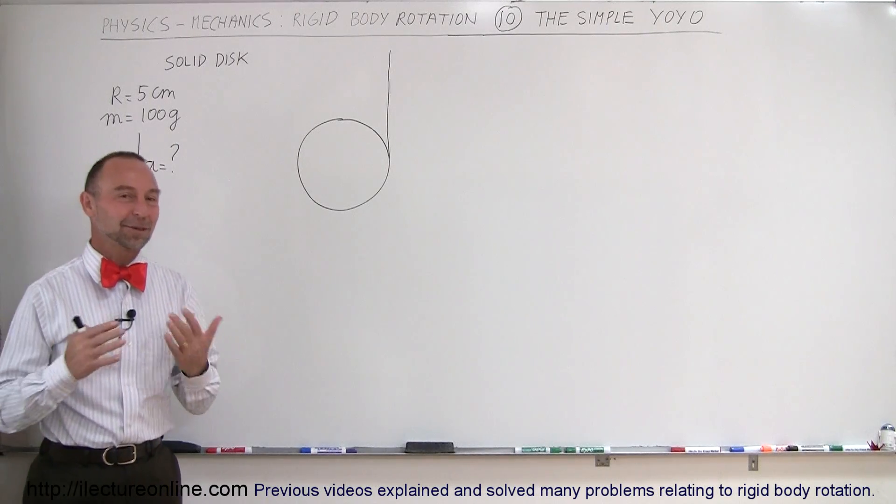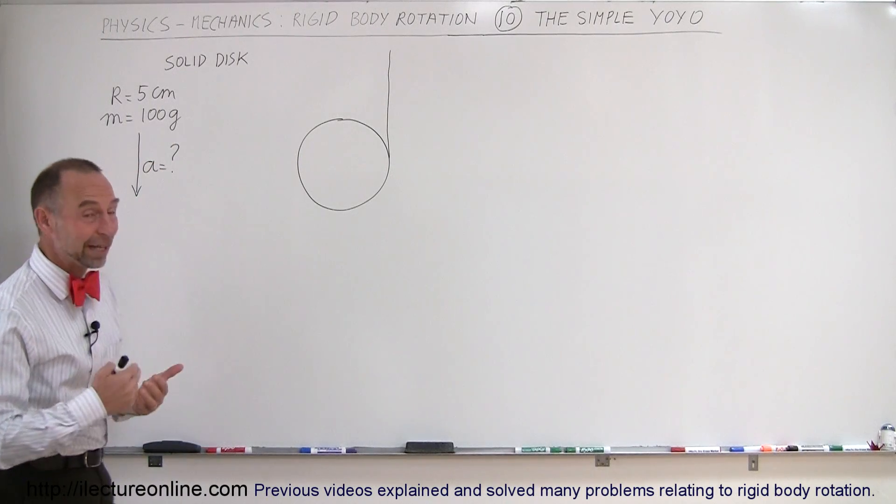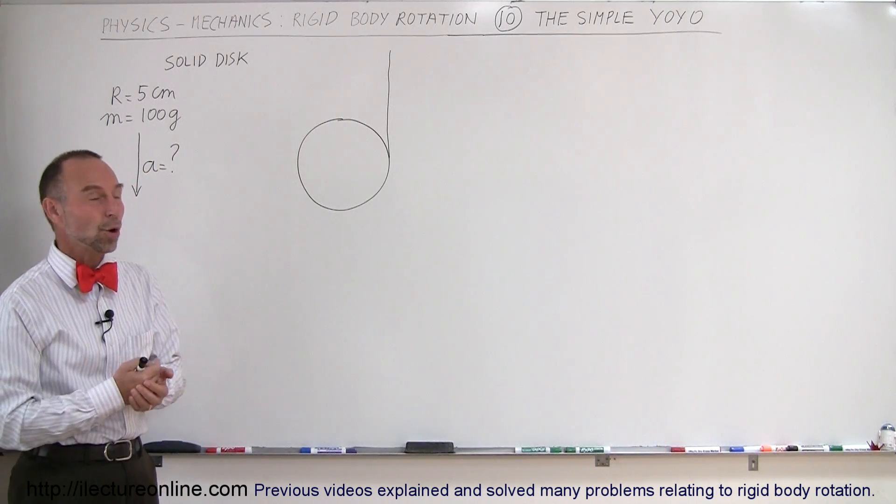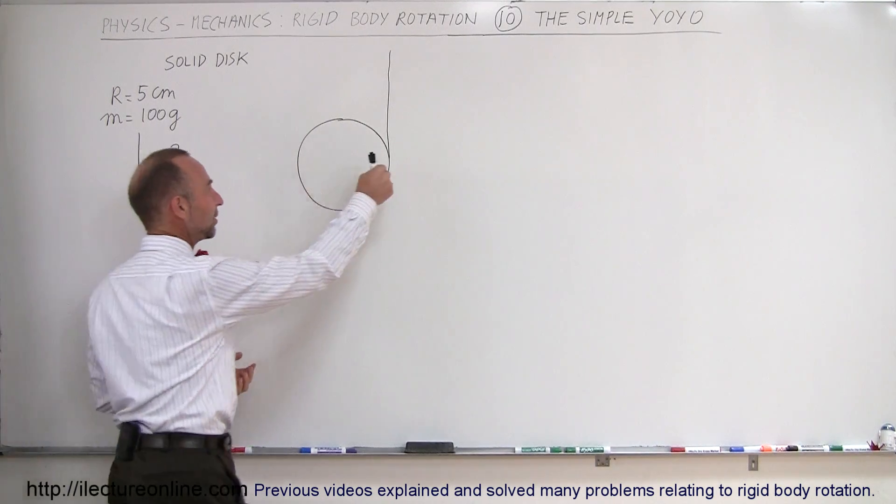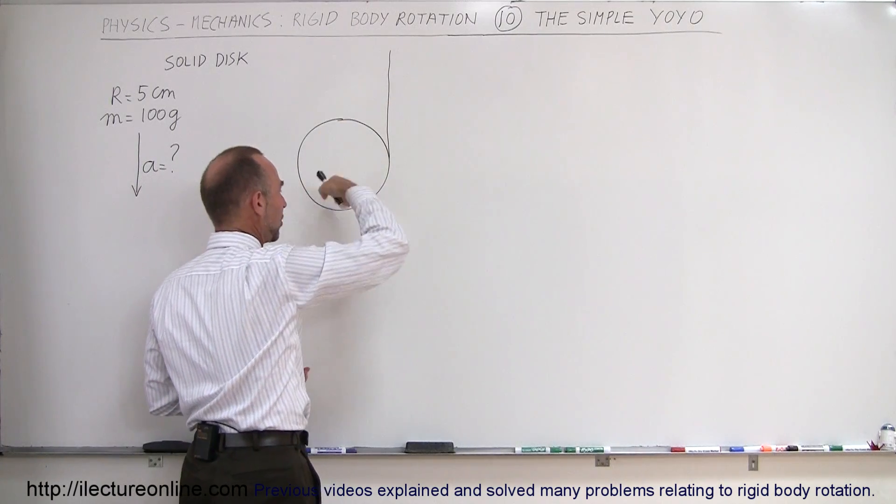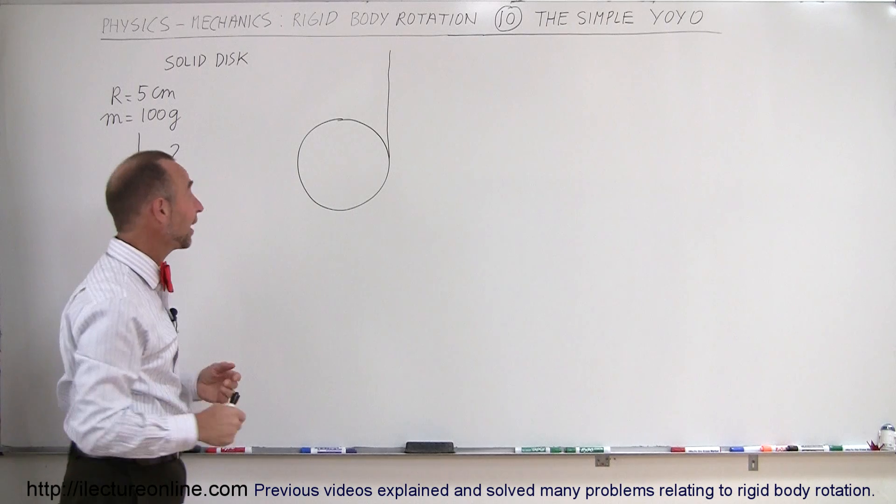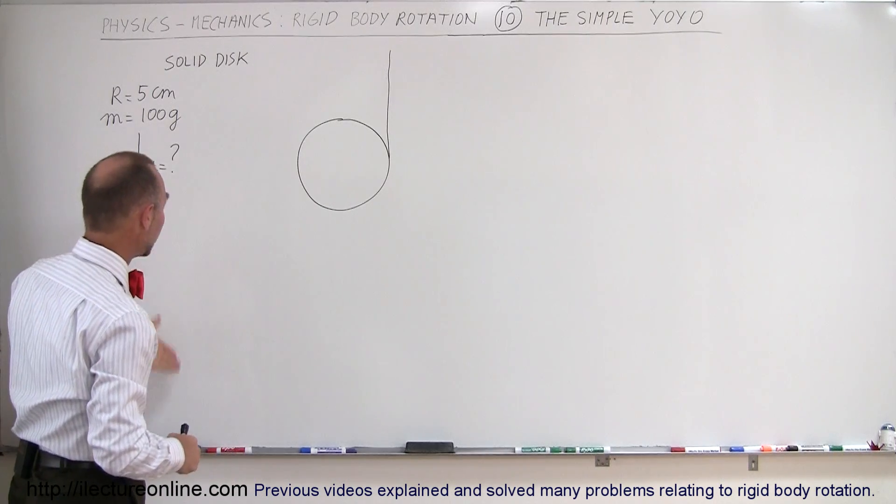Welcome to iLecture Online, and now for something very classic when it comes to rotating objects and rolling objects: the classic or simple yoyo. Let's say we have a yoyo here attached to a string and the yoyo rolls down from the string, and what we're trying to find is the acceleration of the yoyo towards the earth.